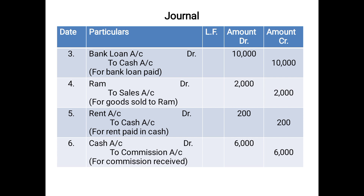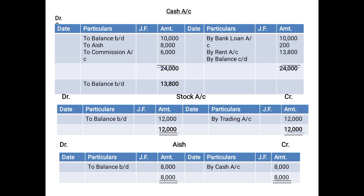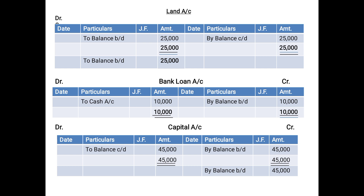The next entry is Bank Loan Account debited, To Cash Account. When posting in Cash Account, you do not record the cash (credit) aspect — you record the debit aspect, which is Bank Loan. Since Bank Loan is debited in the entry, it will be posted on the credit side of Cash Account as 'By Bank Loan Account 10,000'. And in the Bank Loan Account, you record the cash aspect — since cash is credited in the entry, it will be posted on the debit side as 'To Cash Account 10,000'.